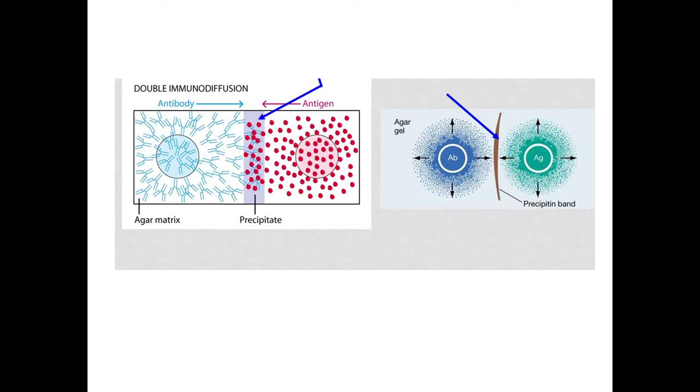Antiserum C and antigen C1 and C2. Along with that, we require micropipettes, micro tips, distilled water, and vials.